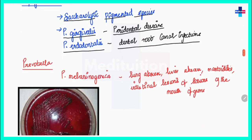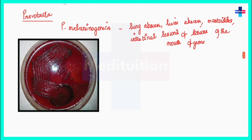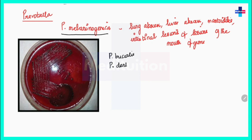The next genus is Prevotella. This organism was also previously classified under Bacteroides but now has a separate genus. Prevotella includes Prevotella melaninogenica, Prevotella buccalis, and Prevotella dentiola.